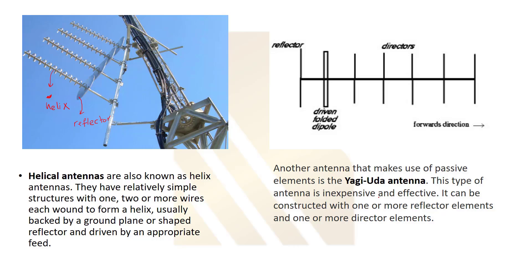The other one is a Yagi-Uda antenna. This type of antenna is inexpensive and effective, and it can be constructed with one or more reflector elements. We have a reflector here and the direction of current is in the forward direction.